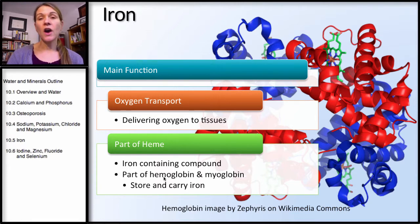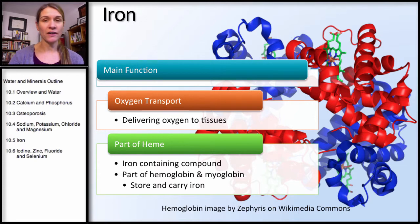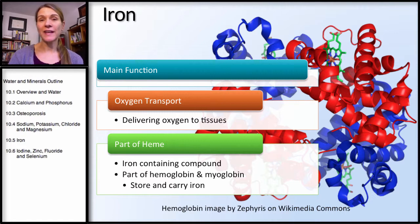These are compounds that carry iron. This is actually a picture of hemoglobin. Remember hemoglobin is a protein — a string of amino acids that coil, fold, and join together. Part of this complex is heme, and part of that heme is iron. So iron is necessary to form this complex and is necessary to carry oxygen.